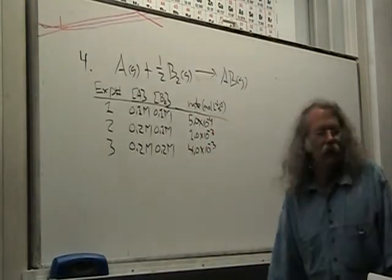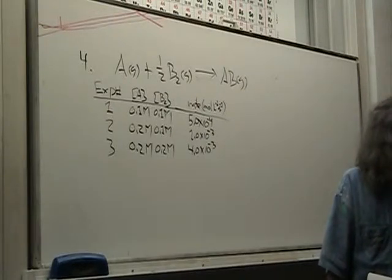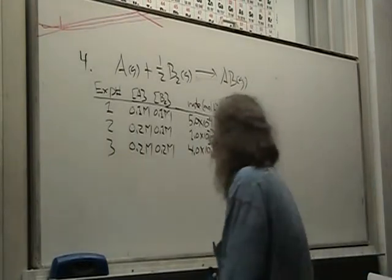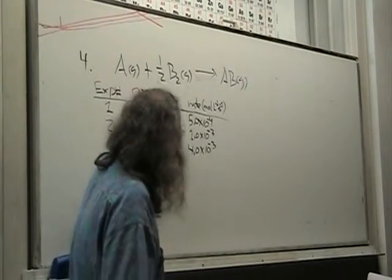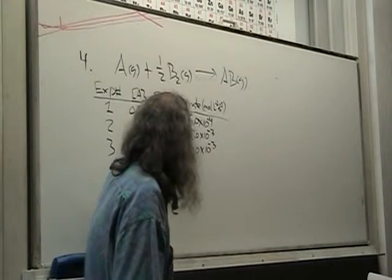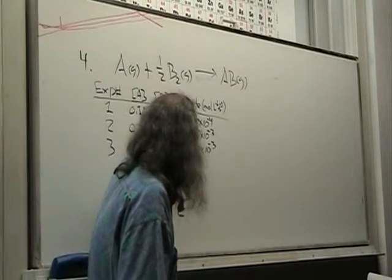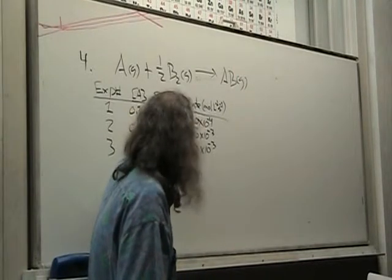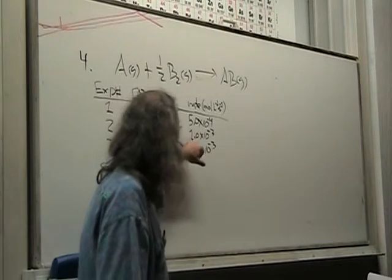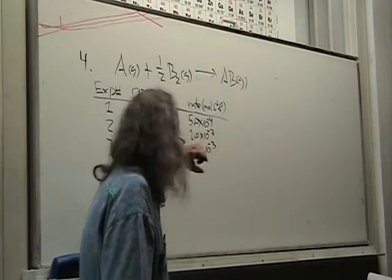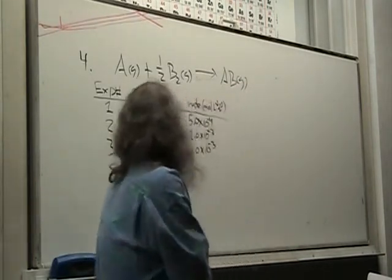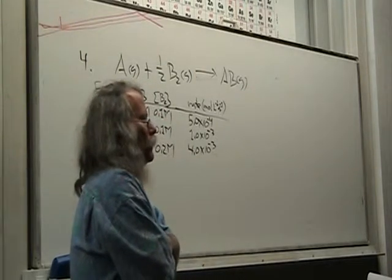You can actually, if you look at that data, you can almost spot it in your head. And it might be a good idea to just look at it for a second. What happened? I double the concentration of A. And what happened to my rate? It increased by... 1.0 times 10 to the minus 3 is equal to what times 5.0 times 10 to the minus 4? 2. 2 times this is that. Okay. So, I doubled it. It doubled the rate. What order is it with respect to A? Second order. No. First order. First order.